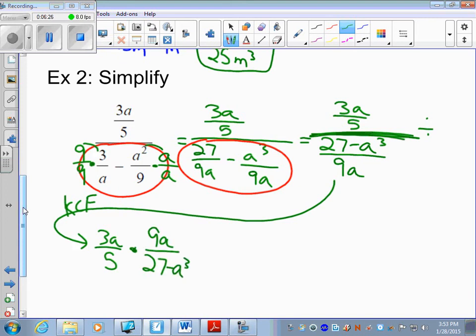Now we look to see if we can factor anything. We have monomial: 3a is a monomial, can't factor that. 5 is a monomial, can't factor that. And 27 minus a to the third, you actually can factor it. This is using the difference of cubes. Cube root of the first term, you get 3. Cube root of the second term, you get a.